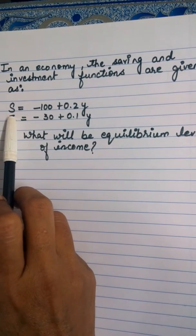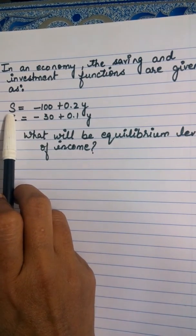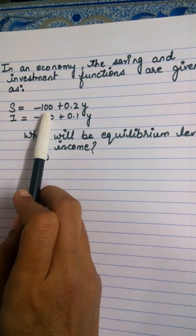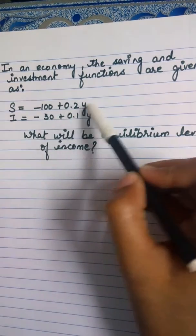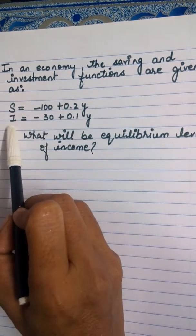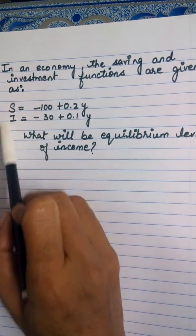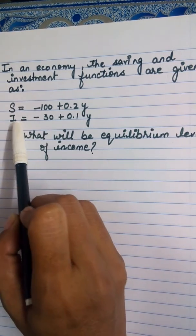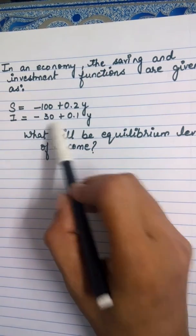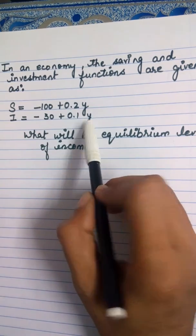In this question, the saving function is given as S equals negative 100 plus 0.2Y. The investment function I is given as I equals negative 30 plus 0.1Y.